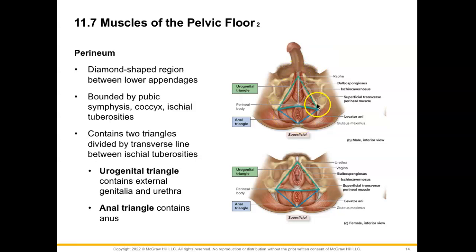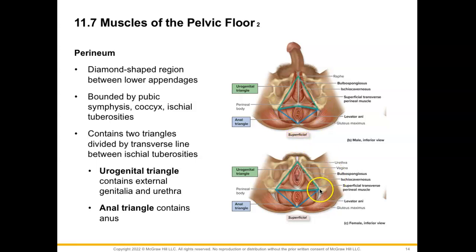The perineum is a diamond-shaped region between the lower appendages and it's bounded by our pubic symphysis, which we would find at the top of the diamond. You can see it a little bit better in the female view. Our coccyx is found posteriorly, and the two ischial tuberosities are a little bit wider spaced in the female. We divide this diamond into two triangles along the transverse line between the ischial tuberosities.